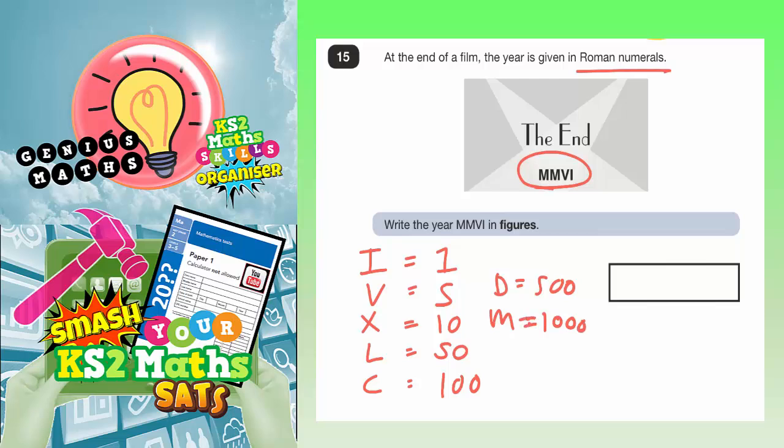So, we need to use this information to figure out what M, M, V, I actually is. Let's write it down here nice and big. M, M, V, I. Okay. Well, this one's actually going to be nice and straightforward.